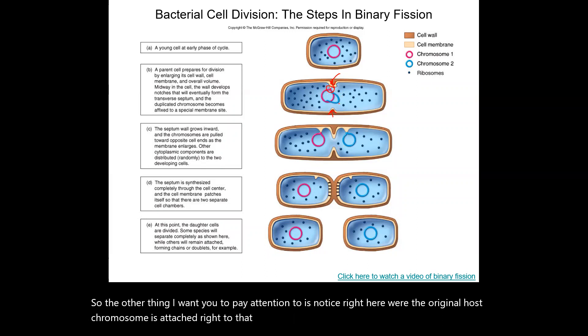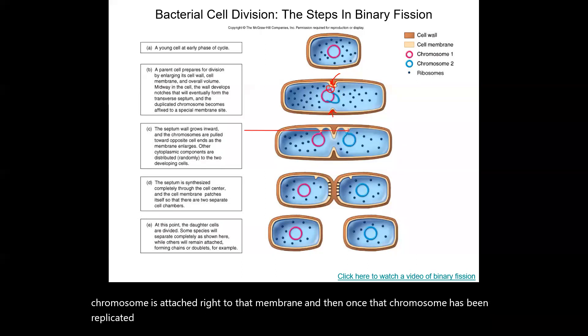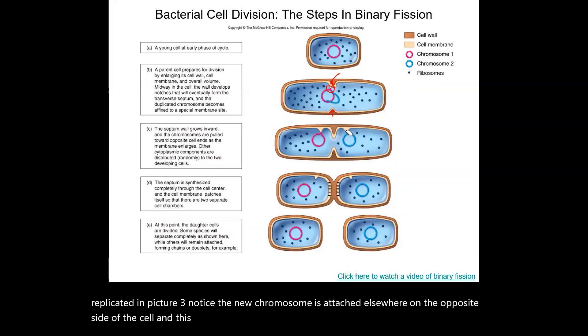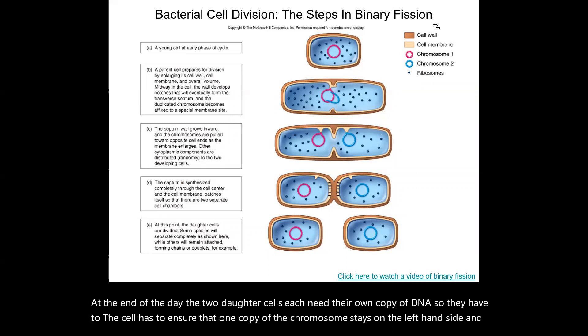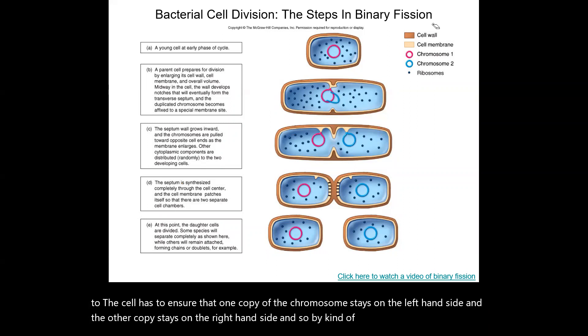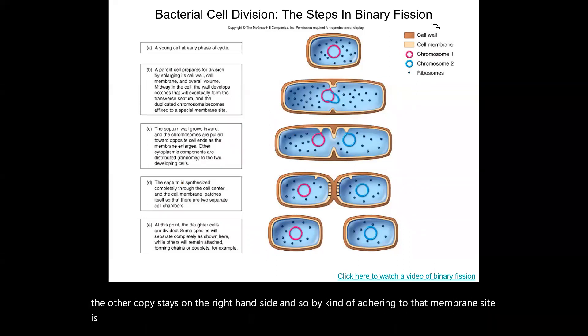And then once that chromosome has been replicated in picture three, notice the new chromosome is attached elsewhere on the opposite side of the cell. And this is really important because at the end of the day, the two daughter cells each need their own copy of DNA. So the cell has to ensure that one copy of the chromosome stays on the left hand side and the other copy stays on the right hand side. And so by adhering to that membrane site is how they make sure that happens.